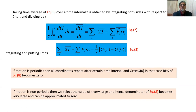Taking a time average over time interval tau — integrating from zero to tau and dividing by the time interval tau — the time average is represented with an overbar. So the time average of DG/DT equals two times the time average of T plus the time average of summation Fi dot Ri.